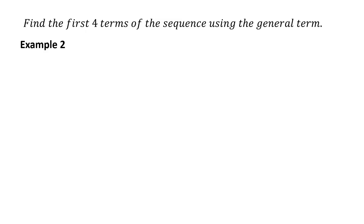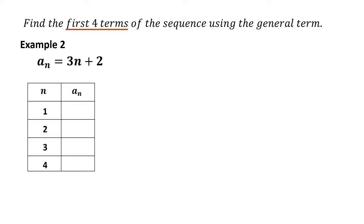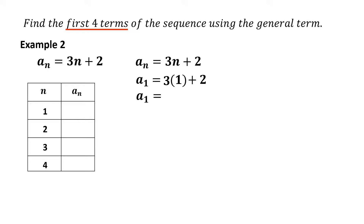For Example 2, the general term is a sub n equals 3n plus 2. We assign n from 1 to 4. Finding the first term: substitute n equals 1, so a sub 1 equals 3 times 1 plus 2 equals 3 plus 2 equals 5. Therefore, the first term is 5.